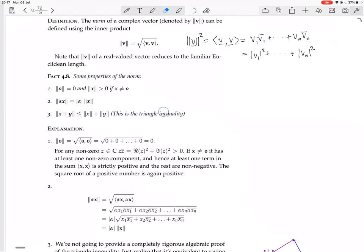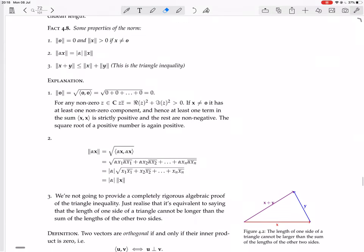And then also, there's the triangle inequality. If you add two vectors and take their norm, that's always less than or equal to taking the norm separately and adding them. So we're going to have some proofs of this stuff.